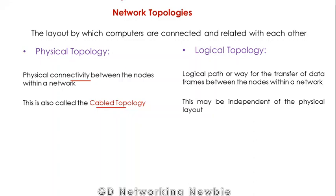In logical topology, we are concerned with the way data frames travel between the nodes — the flow of data frames within a network. This logical topology may be independent of the physical layout, meaning the physical topology may be different from the logical topology.